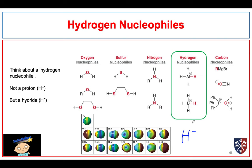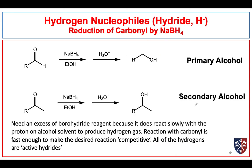So the hydride is actually delivered from a borohydride or an aluminum hydride rather than hydride itself. We can use sodium borohydride — sodium is just a counter cation, and we have the borohydride anion, which delivers the hydrogen as the hydride. We can reduce aldehydes to primary alcohols, and we can reduce ketones to secondary alcohols.